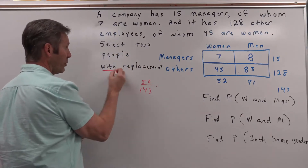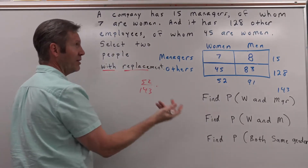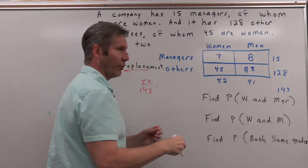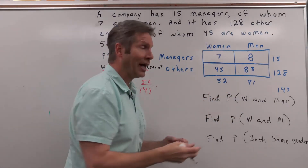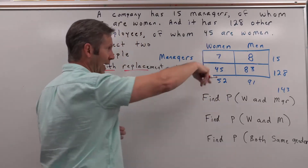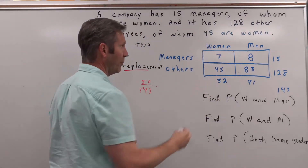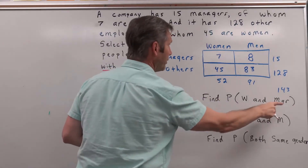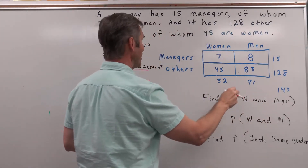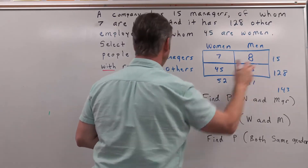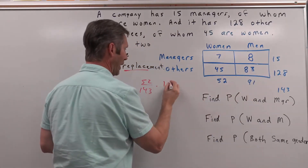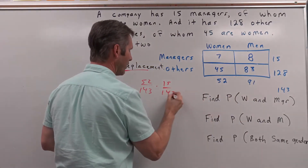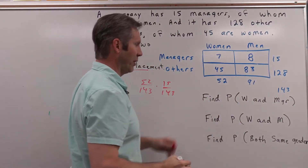The problem says we're doing this with replacement. So whatever woman we take, whether she was a manager or not, goes back into the sample space. So the probability of getting a manager is 15 out of 143. That's the first probability.